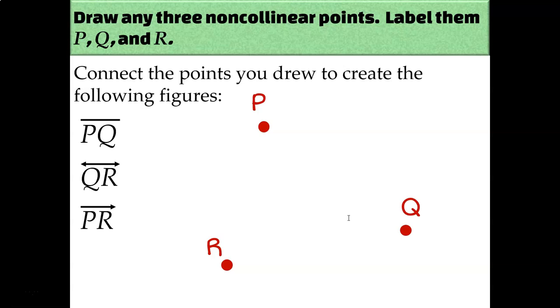Then we're supposed to connect those points to create each of the following figures. We have PQ, QR, and PR, and the symbols above each pair of letters is different. Those symbols relate back to what we learned in the first lesson actually of segments, lines, and rays. PQ has just a segment drawn on top, there's no arrows. So that's the kind of figure that I should draw between my point P and point Q is just a straight line with no arrows. Done.